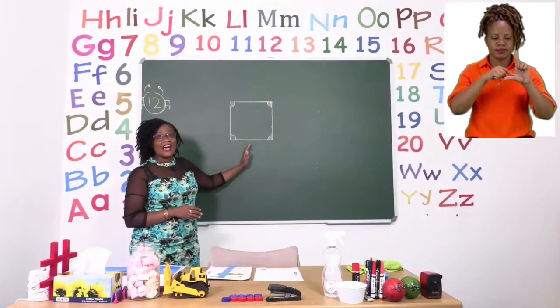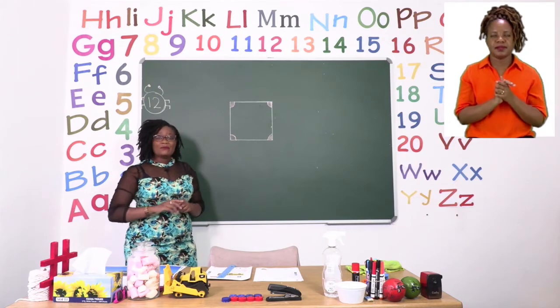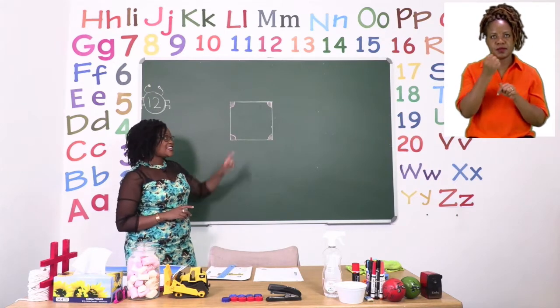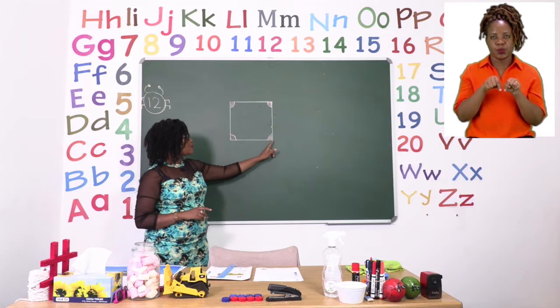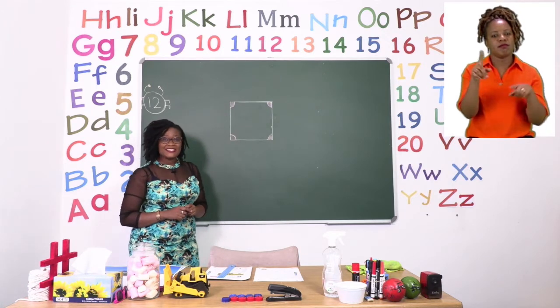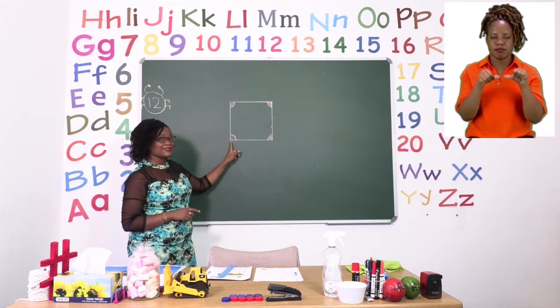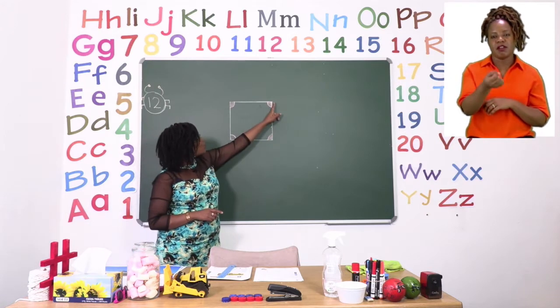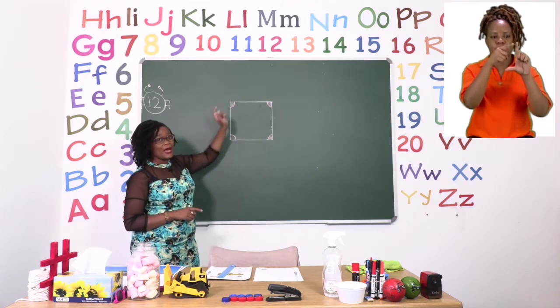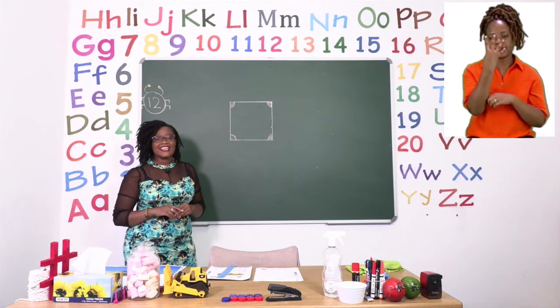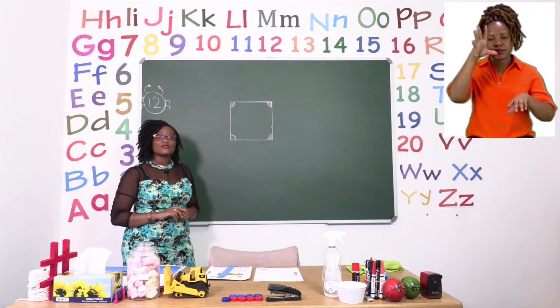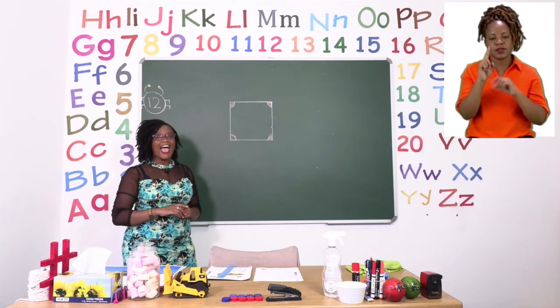Now on the board I have a square. Already what we know about a square is that it has four equal sides. We also know that a square has four corners: one, two, three, four. But now what we are learning today is that a square has four right angles.